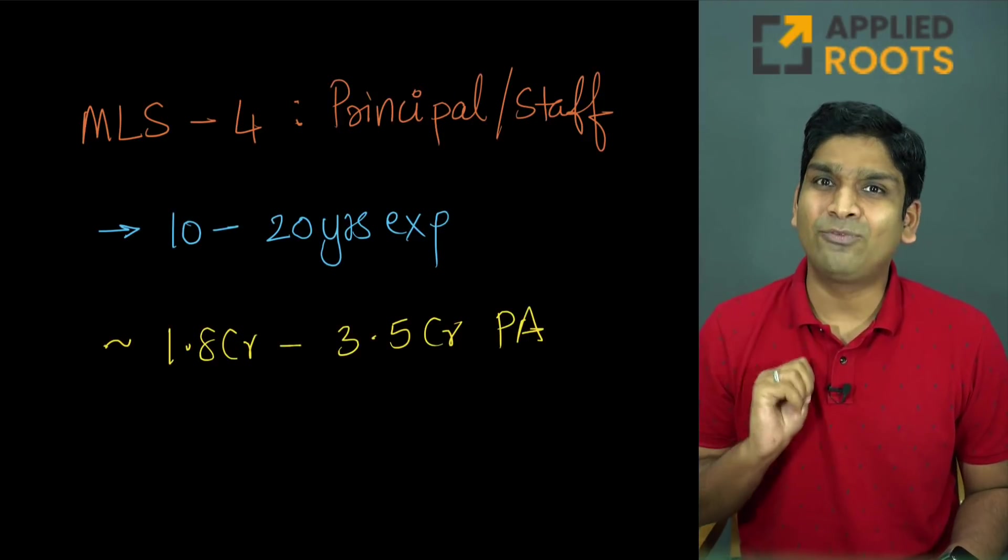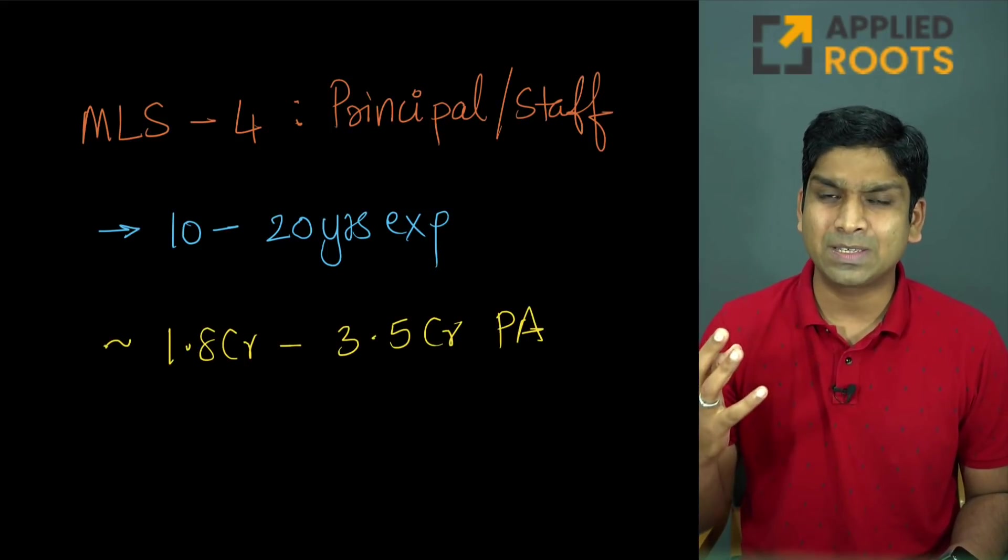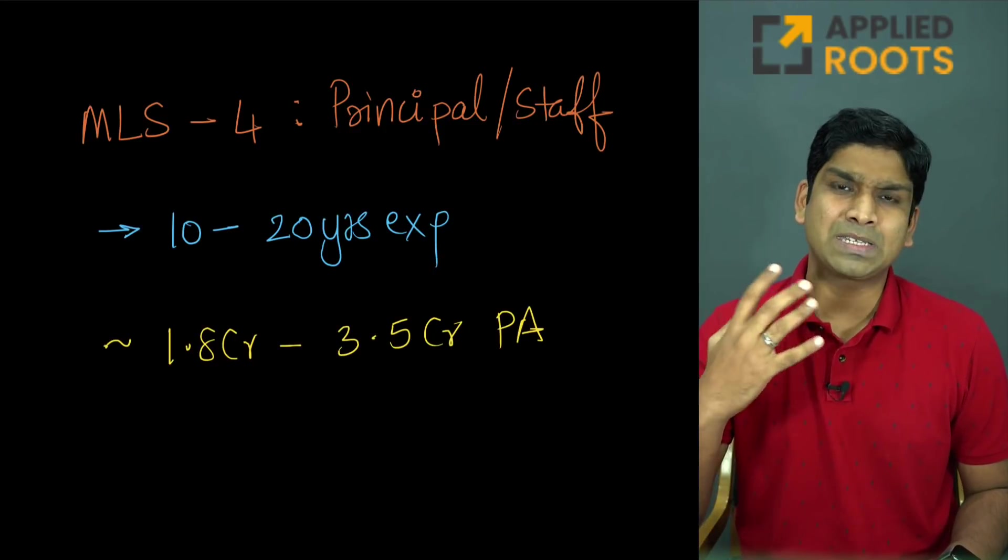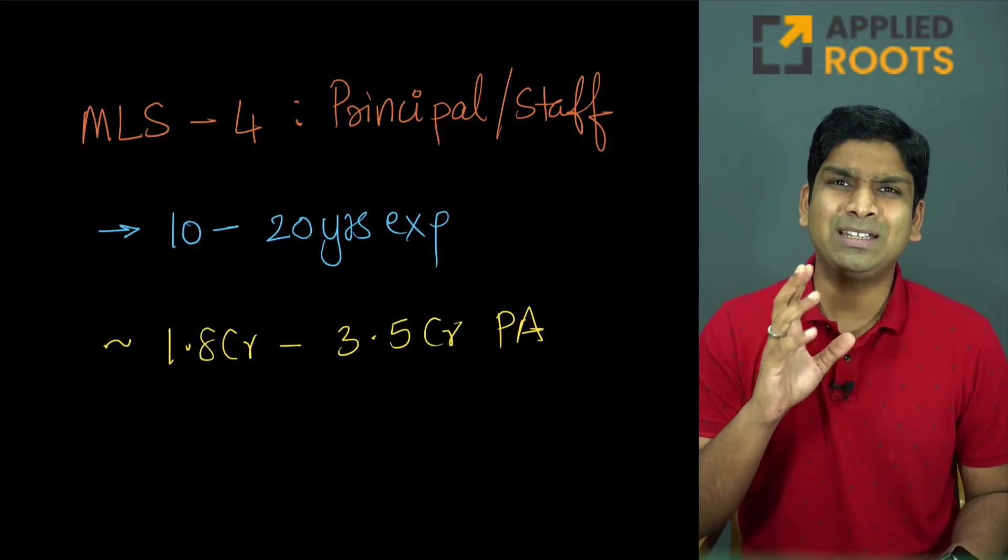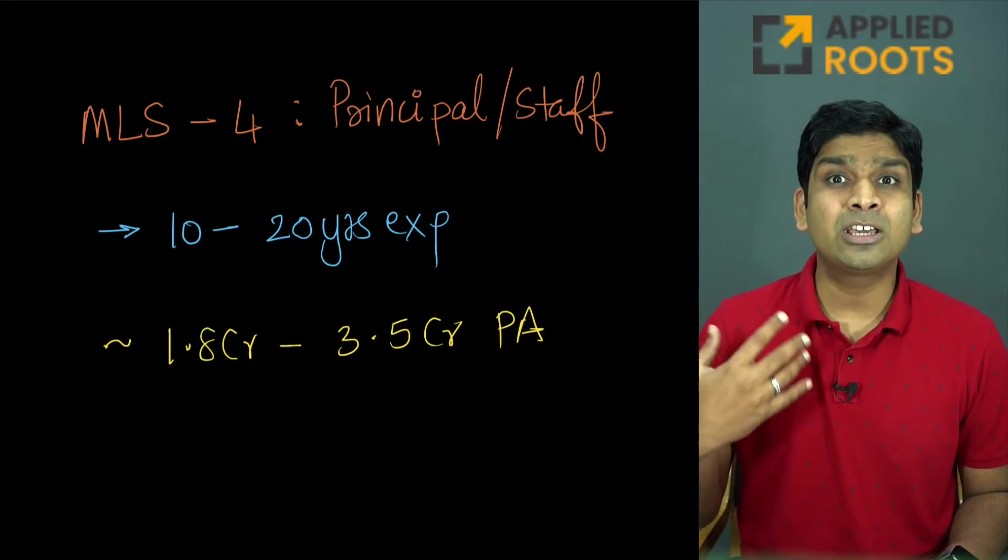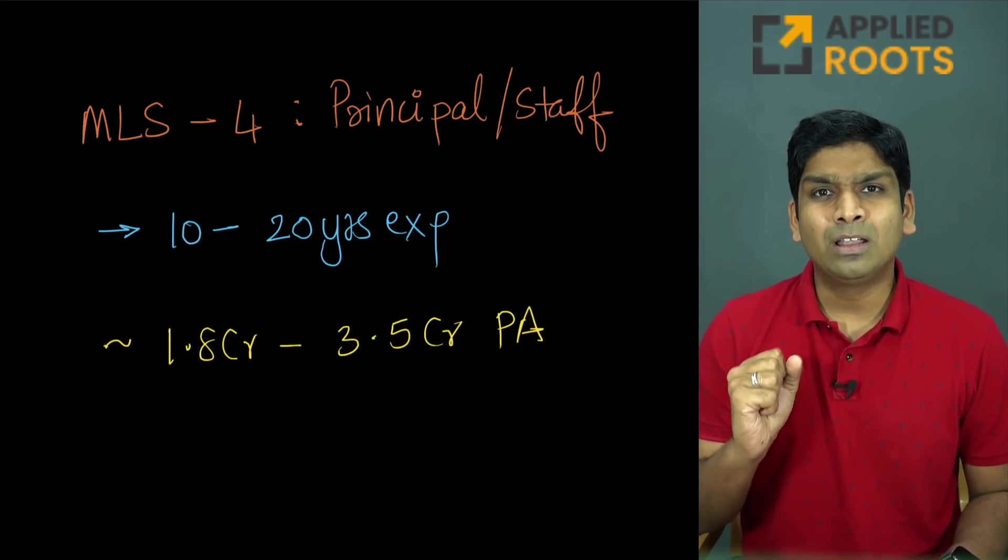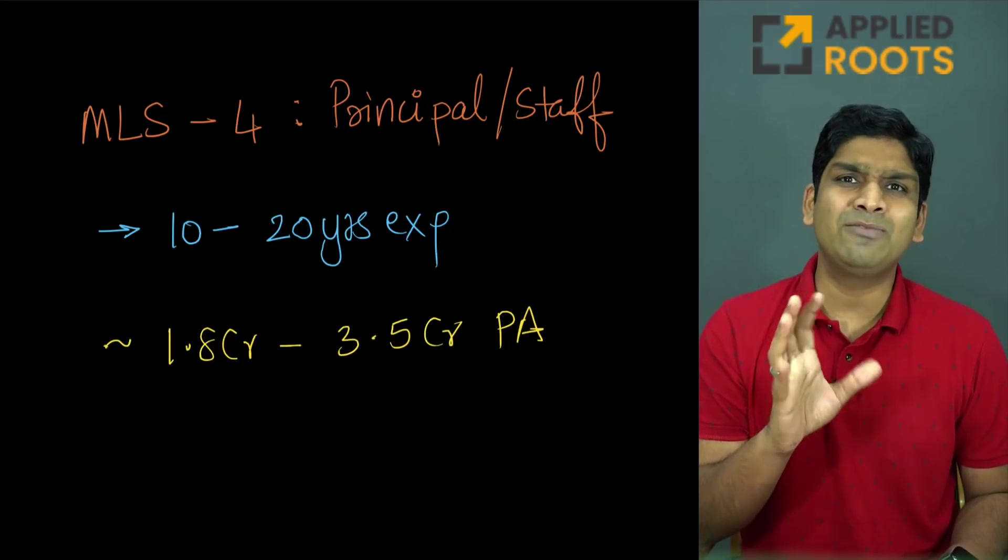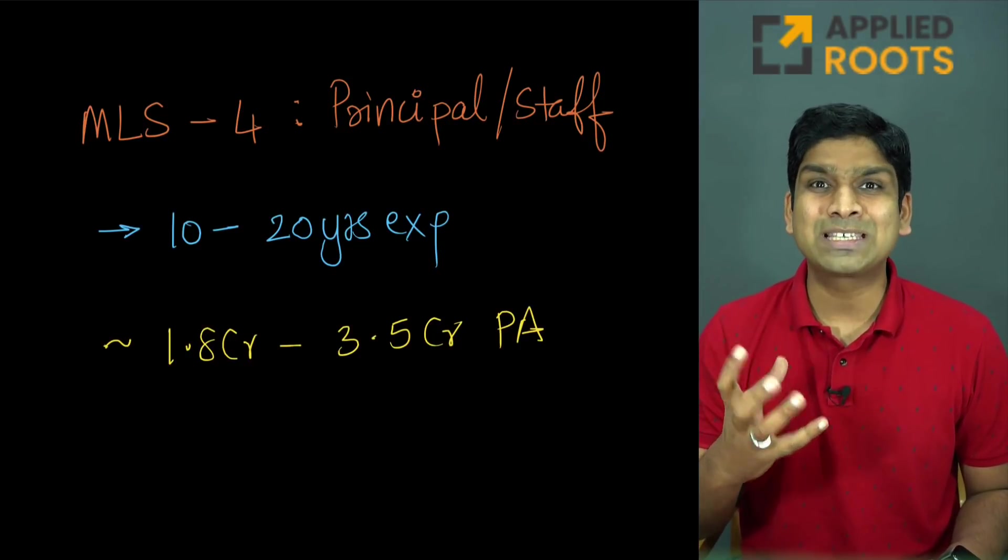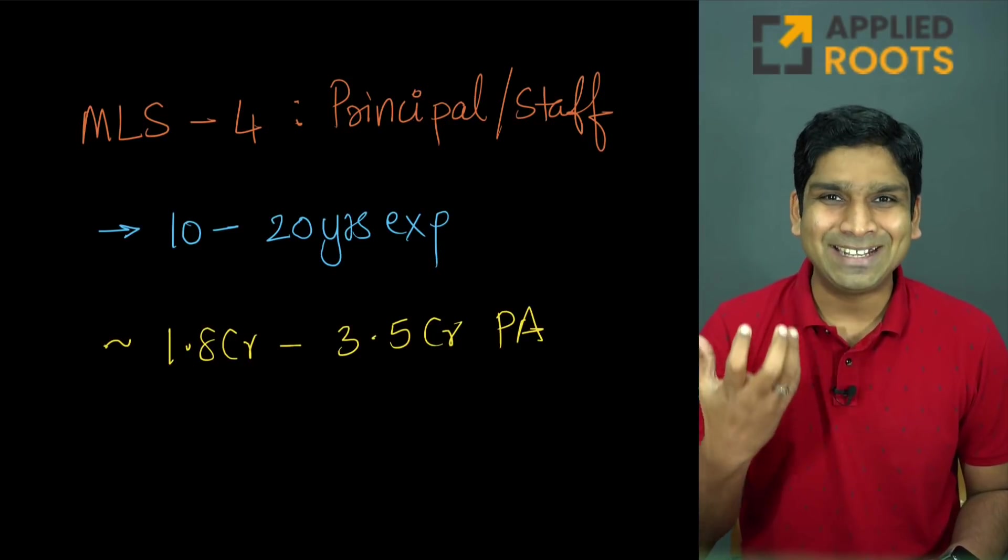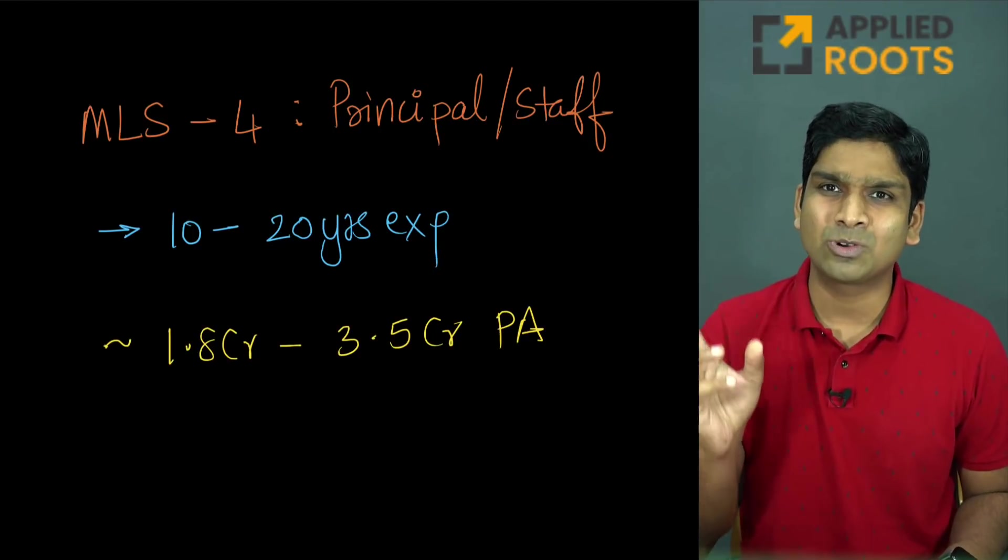Then there is MLS-4, which is machine learning scientist or applied scientist four. These are also sometimes referred to as staff scientists. Some companies also call them senior staff scientists or principal scientists. They typically have anywhere between 10 to 20 years of experience. Lot of senior professors at top universities typically get hired as principal scientists at many of these companies. The compensation for them ranges anywhere from 1.8 crores to 3.5 to 4 crores depending on how skilled the principal scientist is and how wide and deep their knowledge is.